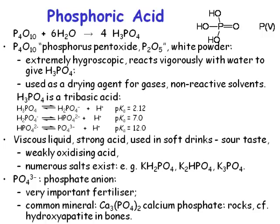What's phosphoric acid actually like to know? Well, phosphoric acid is a viscous liquid. It's a strong acid, but not as strong as sulphuric or nitric acid. It tends to be used to give a sour taste in fizzy drinks, and there's actually quite a lot of phosphoric acid in fizzy drinks.